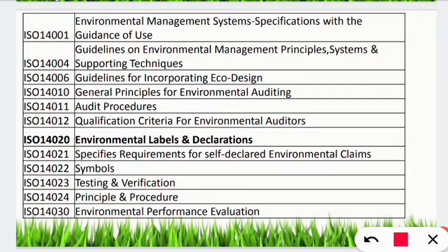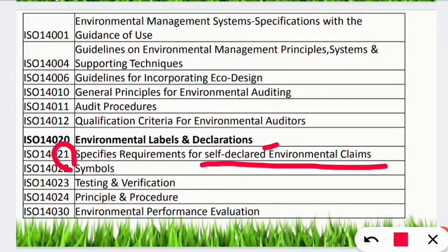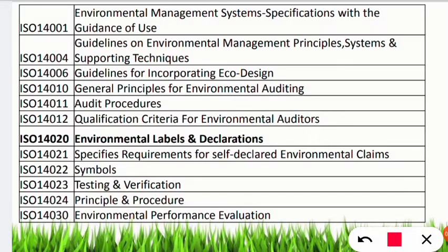ISO 14021 is for self-declared environmental claims. As we are talking about cricketers who are men, in India the legal age for boys for marriage is 21. So at age 21 they are self-declaring that they are now eligible for marriage. This may sound weird, but remember: 21 is for self-declared environmental claims.